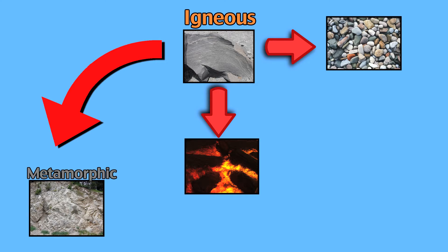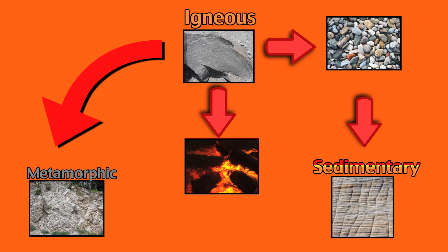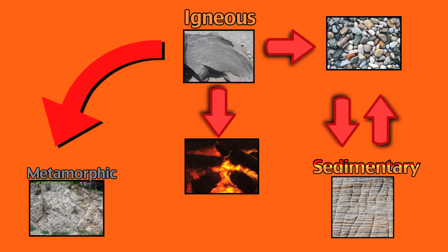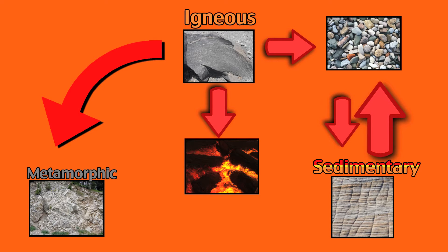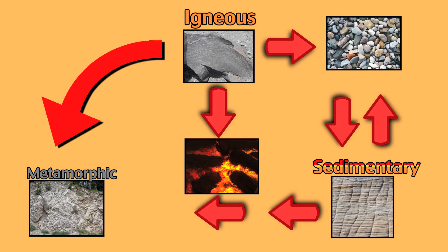If the rock is weathered down to sediment, eventually it will be compacted and cemented to form sedimentary rock. All three types of rock can be weathered down to sediment, so sedimentary rocks are very common. From there, the rocks can either get re-weathered down to sediment, or undergo heat and pressure to become metamorphic rock.